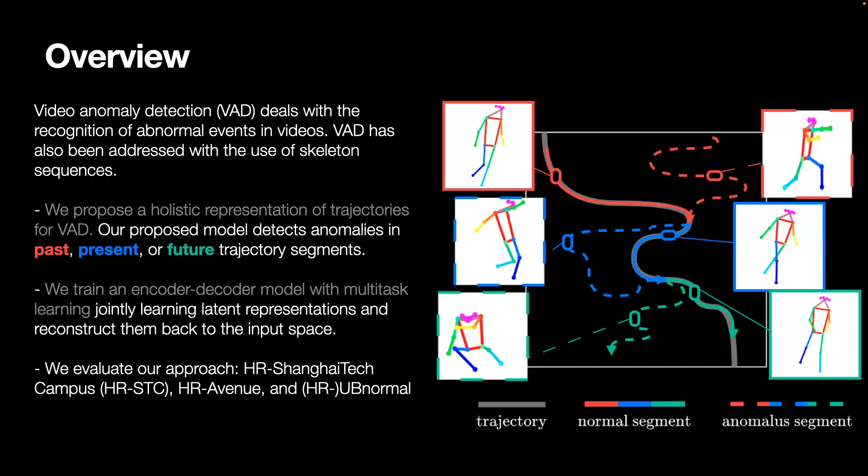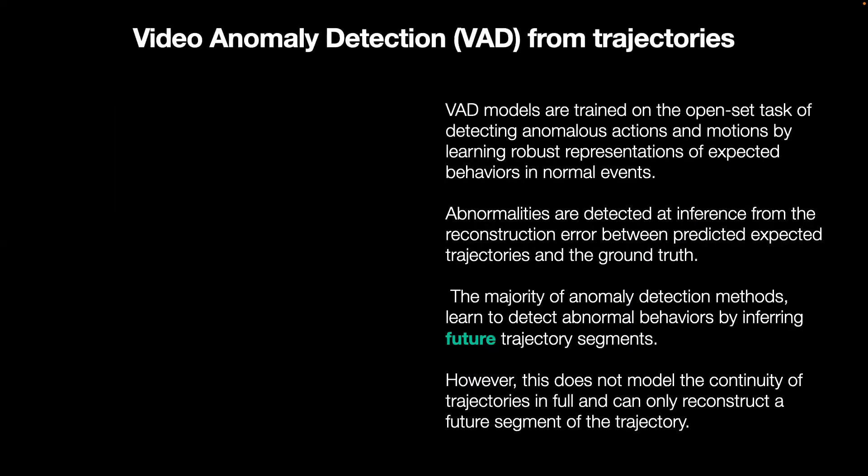We evaluate our approach on three anomaly detection datasets. In video anomaly detection, models are trained on the opposite task of detecting anomalous actions and motions by learning robust representations of expected behaviors in normal events. Anomalies are detected at inference based on the high reconstruction error. The majority of anomaly detection methods learn to detect abnormal behaviors by inferring future trajectory segments.